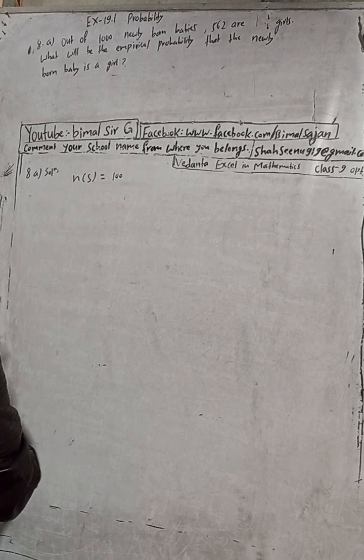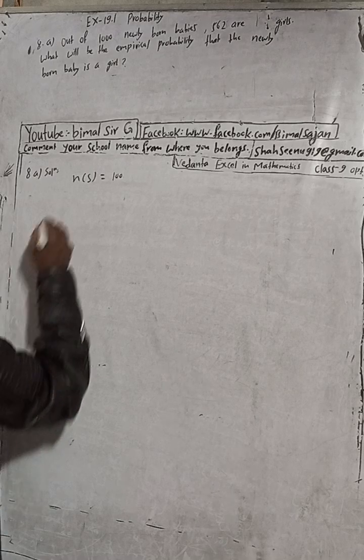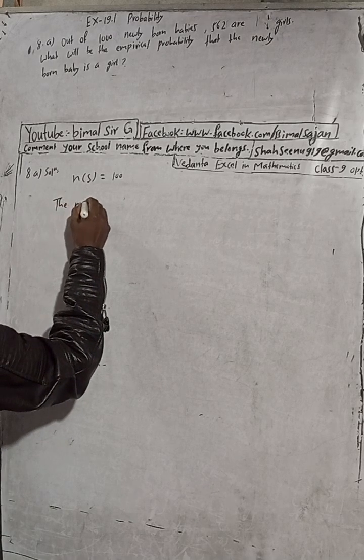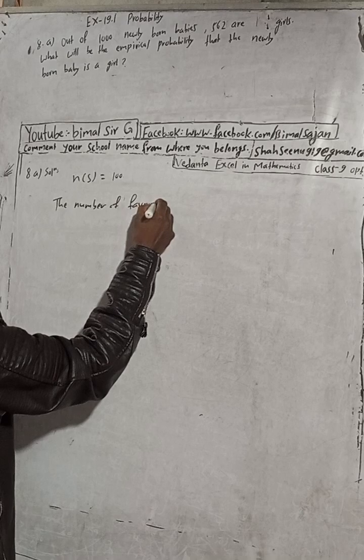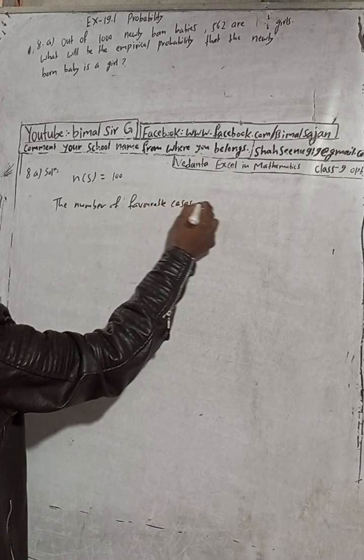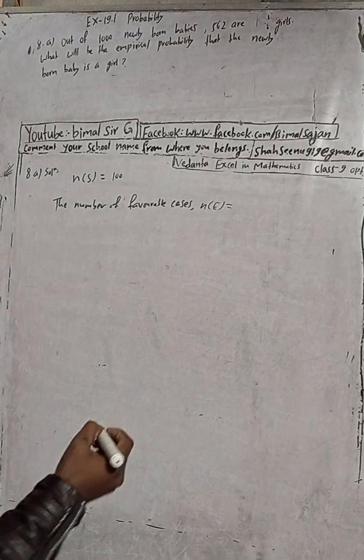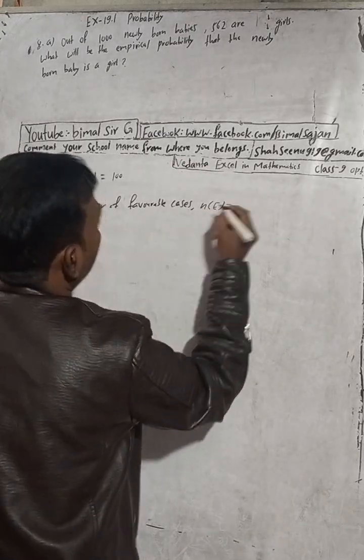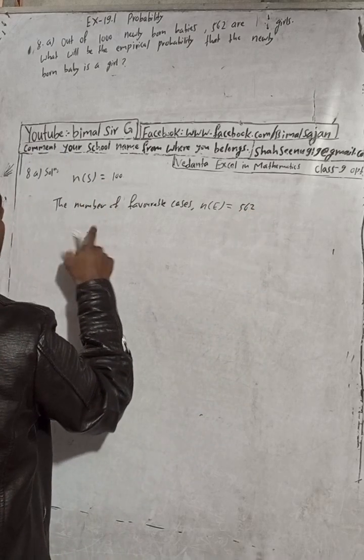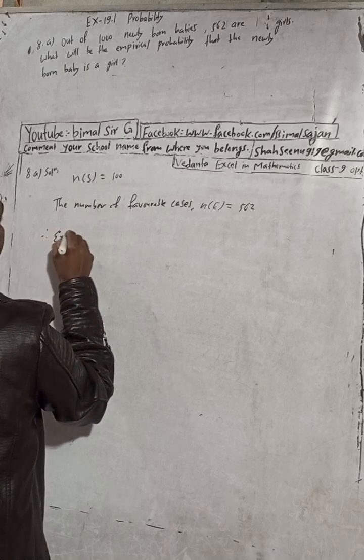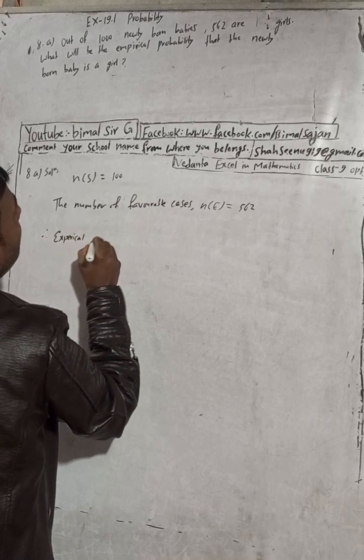So the number of girls, the favorable cases, are the number of favorable cases. Here n(E) is equal to the number of favorable outcomes, which is 562. Therefore P(E)...